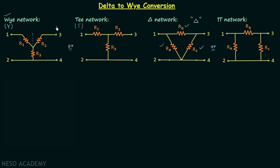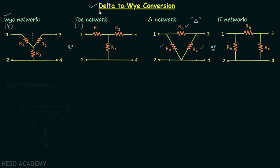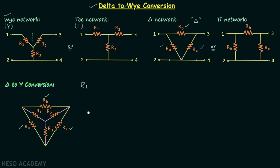We are done with the basic introduction to all the networks. Now we are going to perform the conversion of a delta network to a Y network. This means we have a delta network — we know the values of RA, RB, and RC — and we want a Y network in place of it. That is, we want to calculate R1, R2, and R3. I will first give you the formulas and then we will prove them.